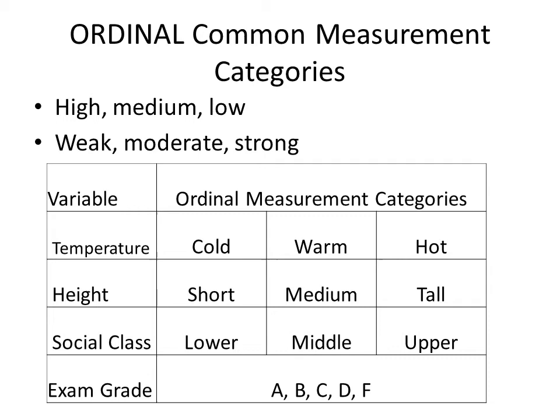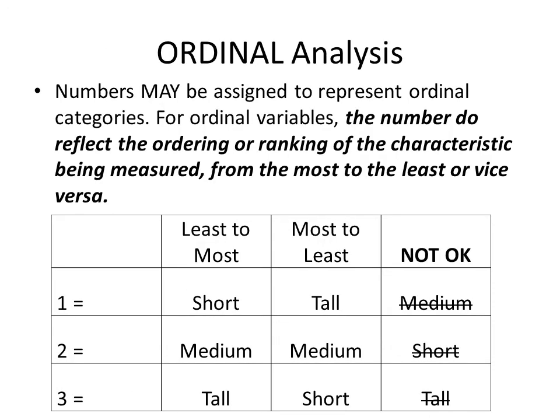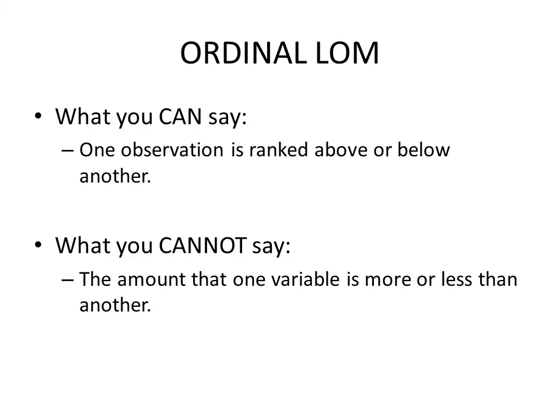Numbers can be assigned to represent ordinal categories, and those numbers do reflect the ordering or ranking of the characteristic — for example, one equals short, two equals medium, three equals tall, or reversed. However, you cannot mix the order. What we can say at the ordinal level is that one observation is ranked above or below another. What we cannot say is the amount by which one variable is more or less than another.